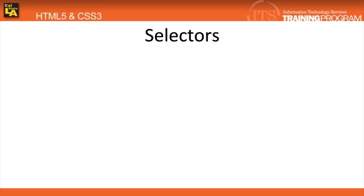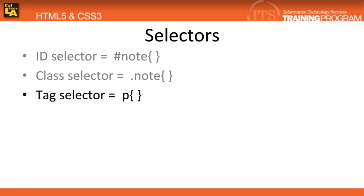There are three types of selectors. ID selectors, which are defined with a pound sign. Class selectors, which are defined with a period. And tag selectors, which are defined by tag names. An example of each is shown on screen.